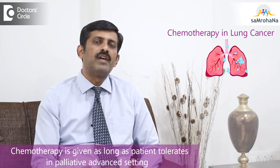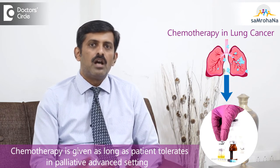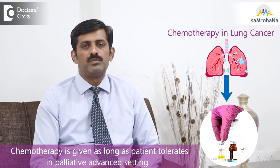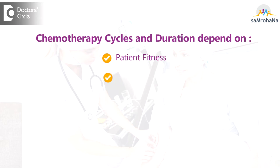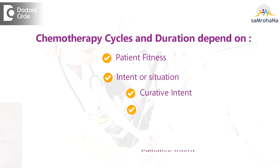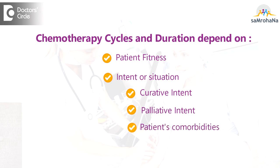Whereas in a palliative or advanced setting, the rounds of chemotherapy we usually give for as long as the patient tolerates, or until the patient develops major side effects. So the number of cycles and the duration depends on patient fitness, whether you are giving with curative intent or palliative intent, and what the patient's co-morbidities are. Based on all those things, we decide on the number of cycles.